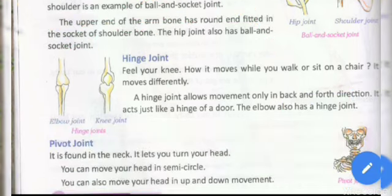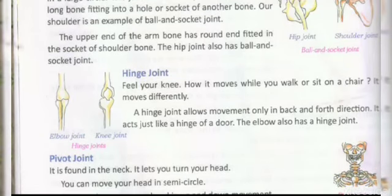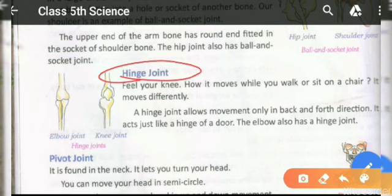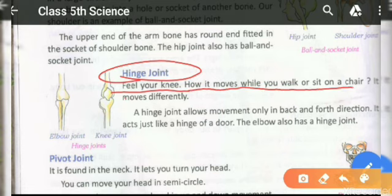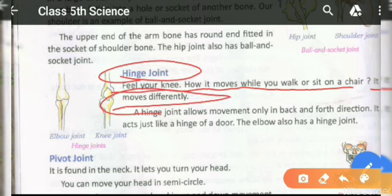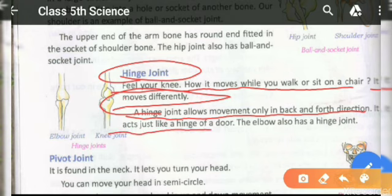The next joint is the hinge joint. Feel your knee — the hinge joint allows movement only in a back and forth direction. It acts just like a hinge of a door. The elbow also has a hinge joint.